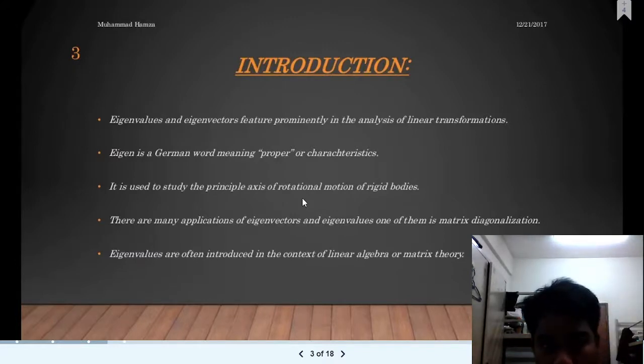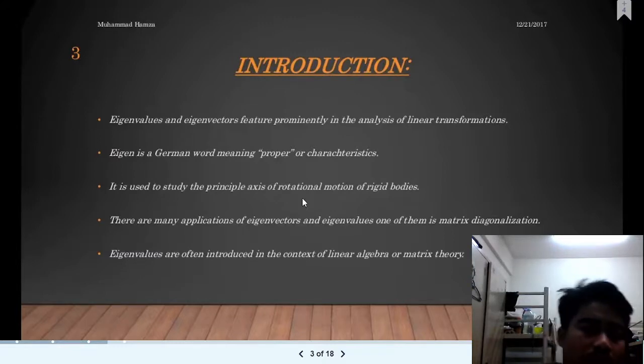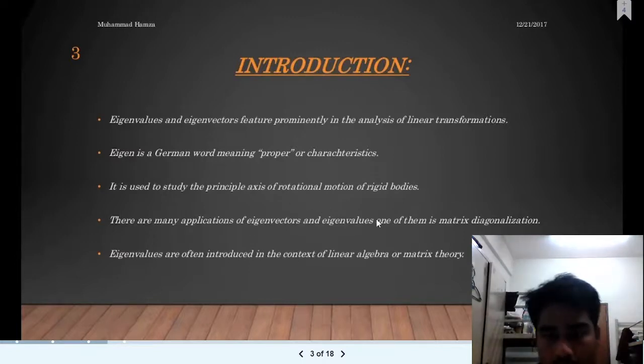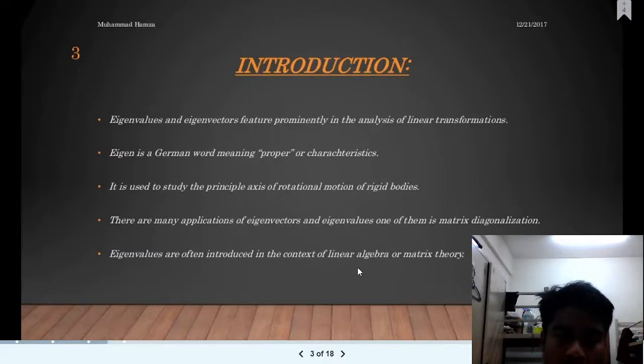Eigenvalues and eigenvectors feature prominently in the analysis of linear transformations. Eigen is a German word meaning proper or characteristic. It is used to study the principal axis, rotation, and motion of rigid bodies. There are many applications of eigenvalues and eigenvectors, one of them is matrix diagonalization. Eigenvalues are often introduced in the context of linear algebra or matrix theory.